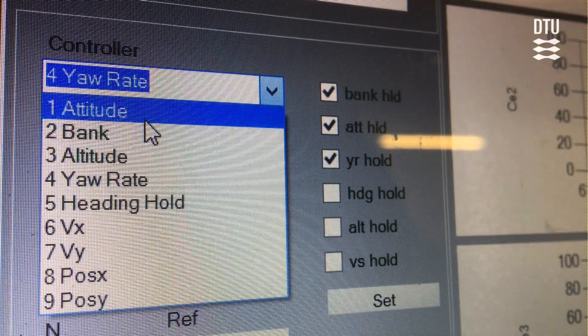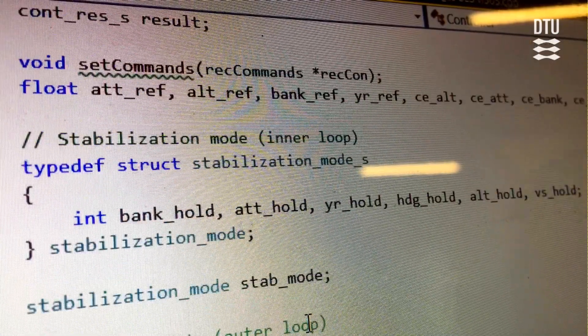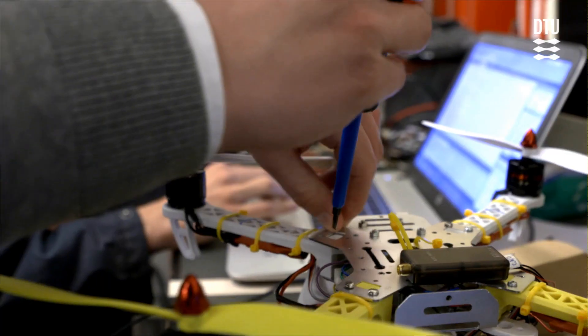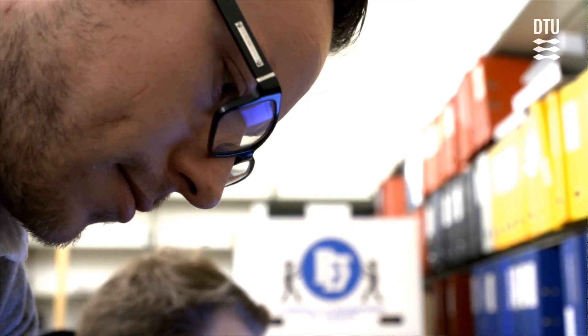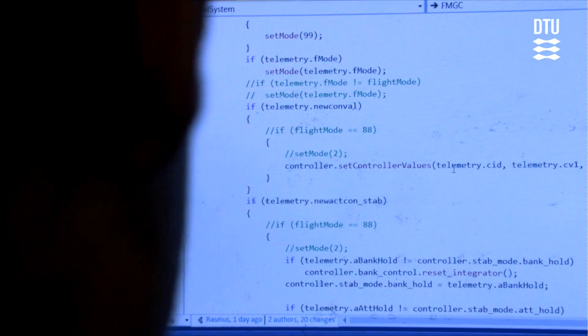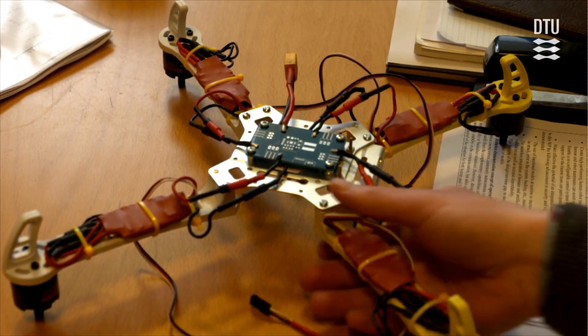I am writing my master thesis about drones, UAVs basically, about navigation for autonomous unmanned aerial vehicles. Basically it's about navigating autonomously in indoor environments which is quite difficult actually. There are a lot of obstacles to getting it to work properly.